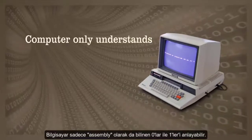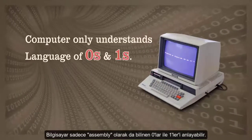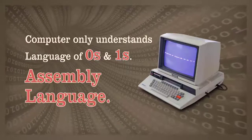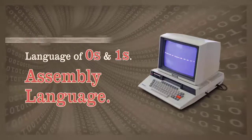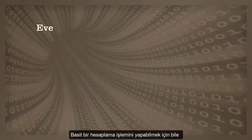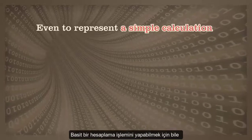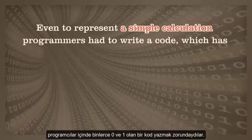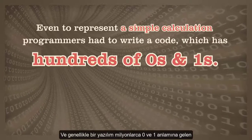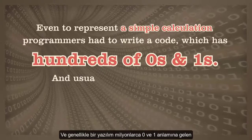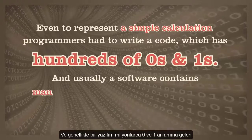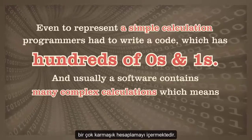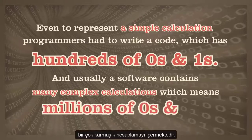Computers only understand the language of zeros and ones, known as assembly language. Even to represent a simple calculation, programmers had to write code which has hundreds of zeros and ones, and usually a software contains many complex calculations, which means millions of zeros and ones.